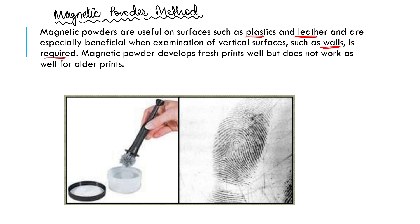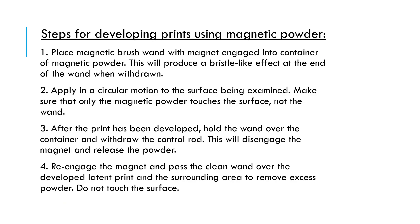Magnetic powder develops fresh prints well but does not work well with older prints. If the fingerprint is an aged fingerprint — meaning it is really very old — the magnetic powder method will not work as efficiently as it does on fresh fingerprints. This is one drawback of the magnetic powder fingerprint development method.